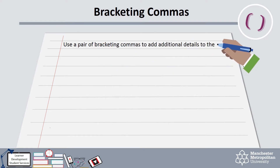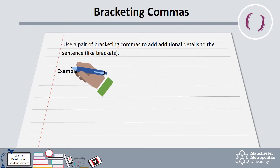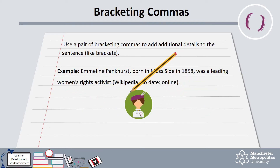Bracketing commas are useful for adding additional details or background into your sentence. For example: Emmeline Pankhurst, born in Mossside in 1858, was a leading women's rights activist. The two commas go around the extra information like brackets. You can usually hear where this extra information is located because your voice will change a little when you read it aloud: Emmeline Pankhurst, born in Mossside in 1858, was a leading women's rights activist.